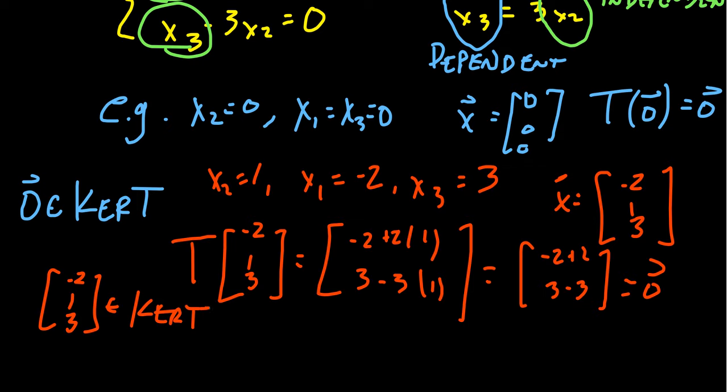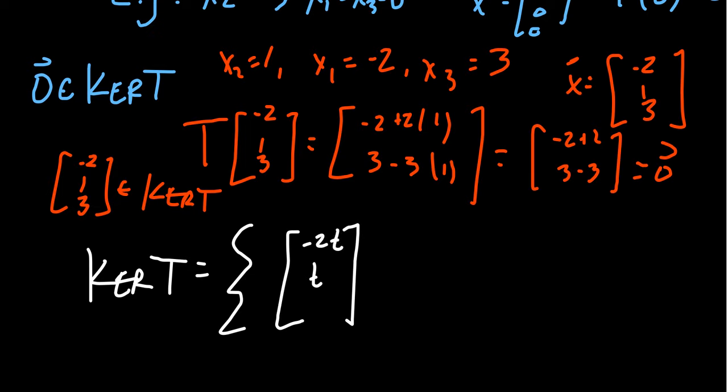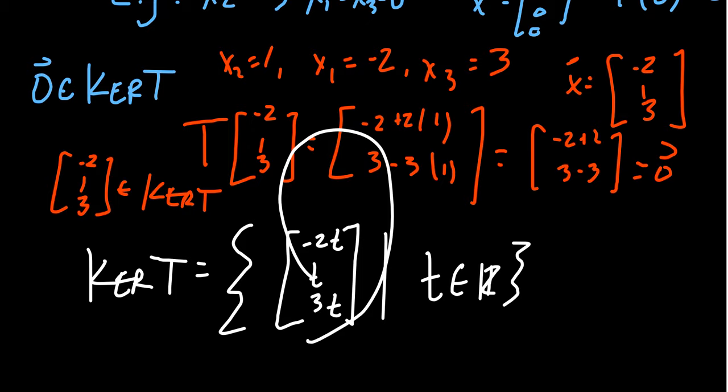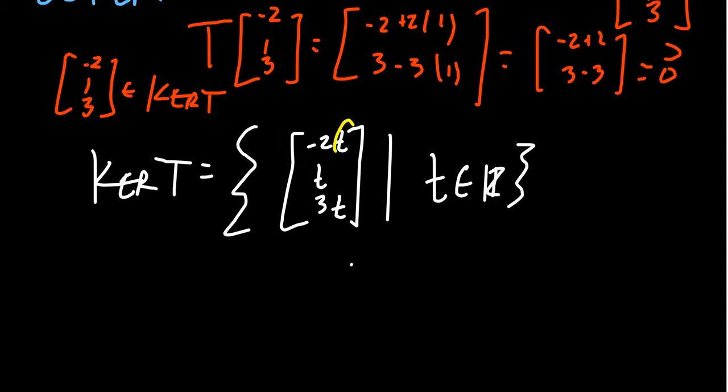So what else is inside the kernel? Well, since we have this free variable of x2, we can just choose x2 to be whatever we want. And we're going to see the following. The kernel of this map is going to be the set of all vectors of the following form. x2 could be whatever you want. x1 will just be negative two times that number you chose. And then x3 will just be three times that number you chose, where t could be an arbitrary real number. And so the kernel is going to be all vectors of this form right here. The two examples we saw already is when t was zero and t was one.